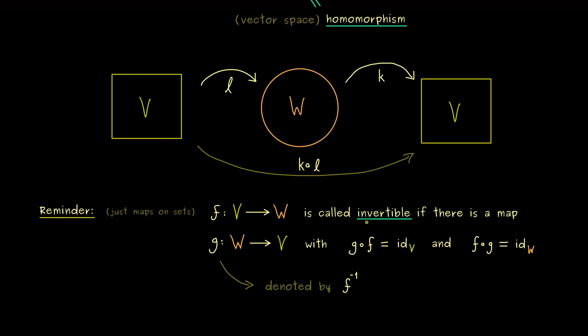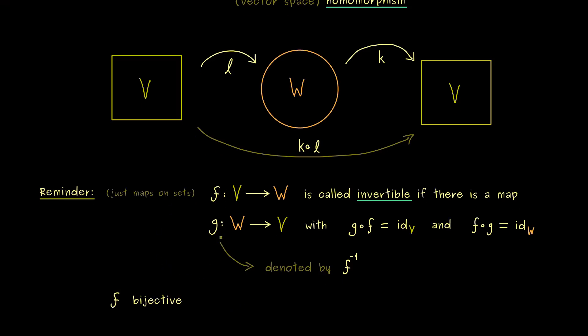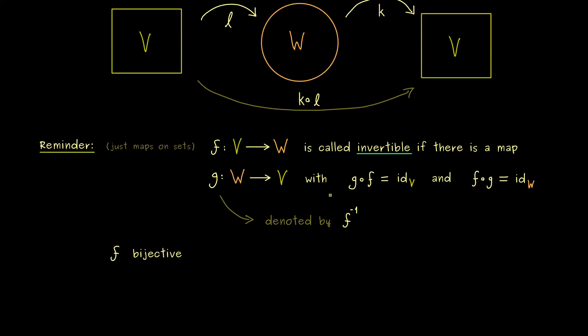And moreover you should know that on this level being invertible and being bijective is exactly the same thing. So you should remember, if we talk about maps on sets, we can say invertible or bijective, but we mean the same thing.